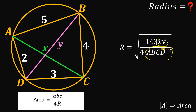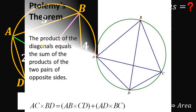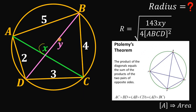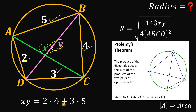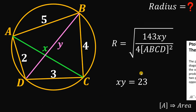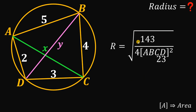To find XY we use Ptolemy's theorem, which states that the product of the diagonals equals the sum of the products of the two pairs of opposite sides. So XY equals 2 times 4 plus 3 times 5, which is 8 plus 15, giving us XY equals 23. Substituting into our formula: 143 times 23 equals 3,289.